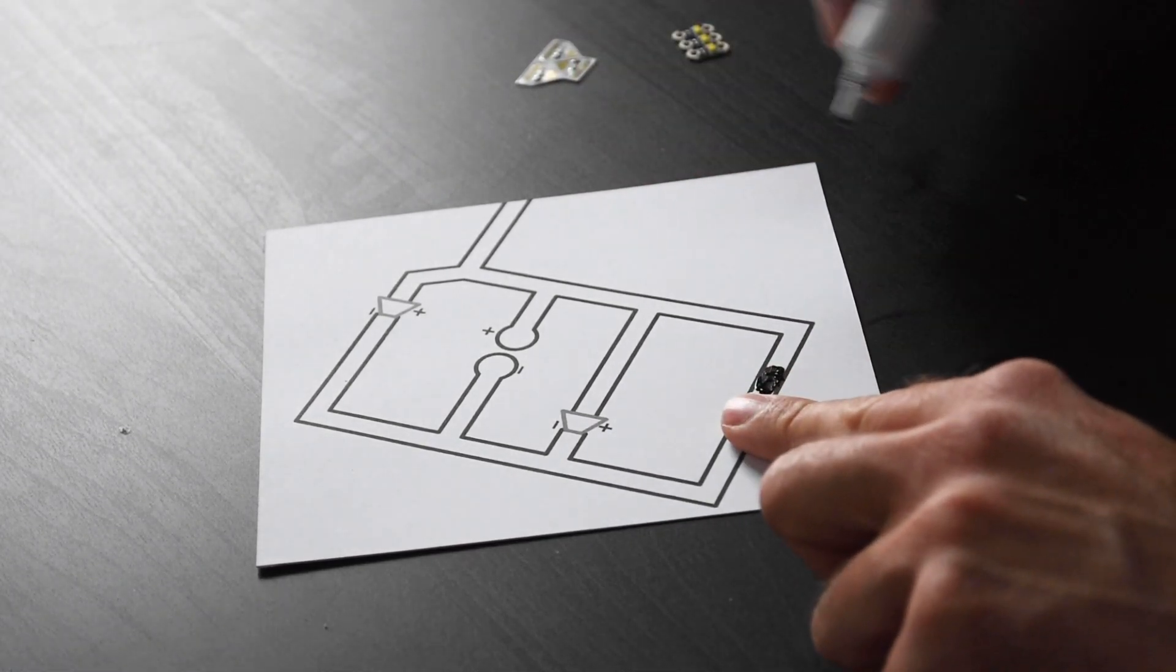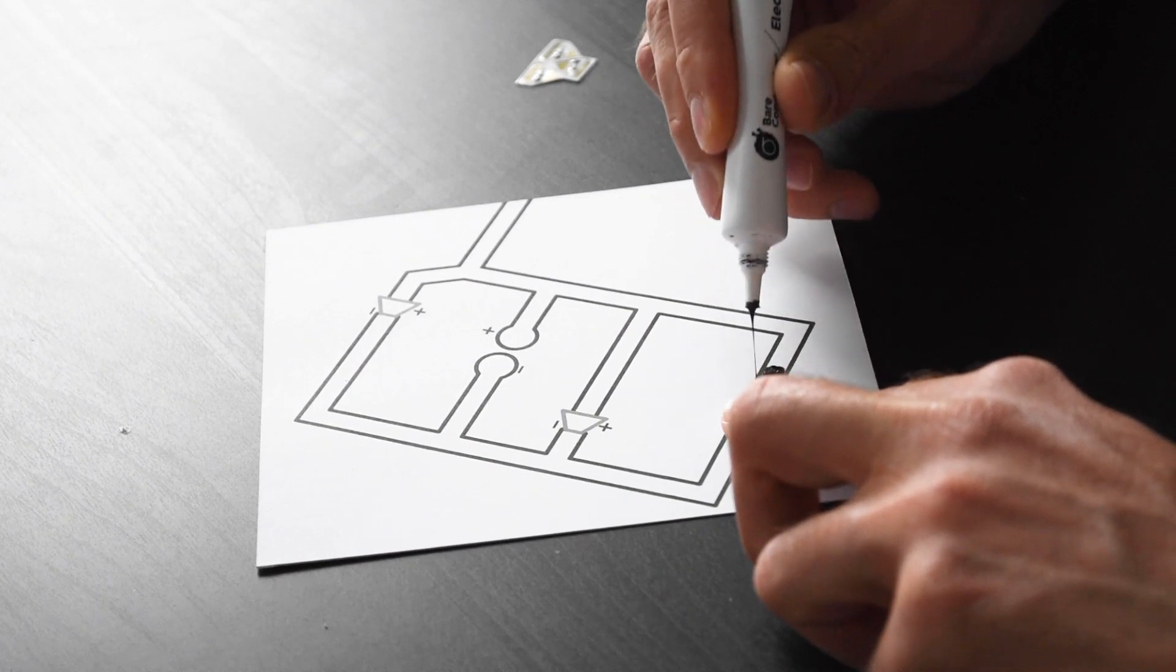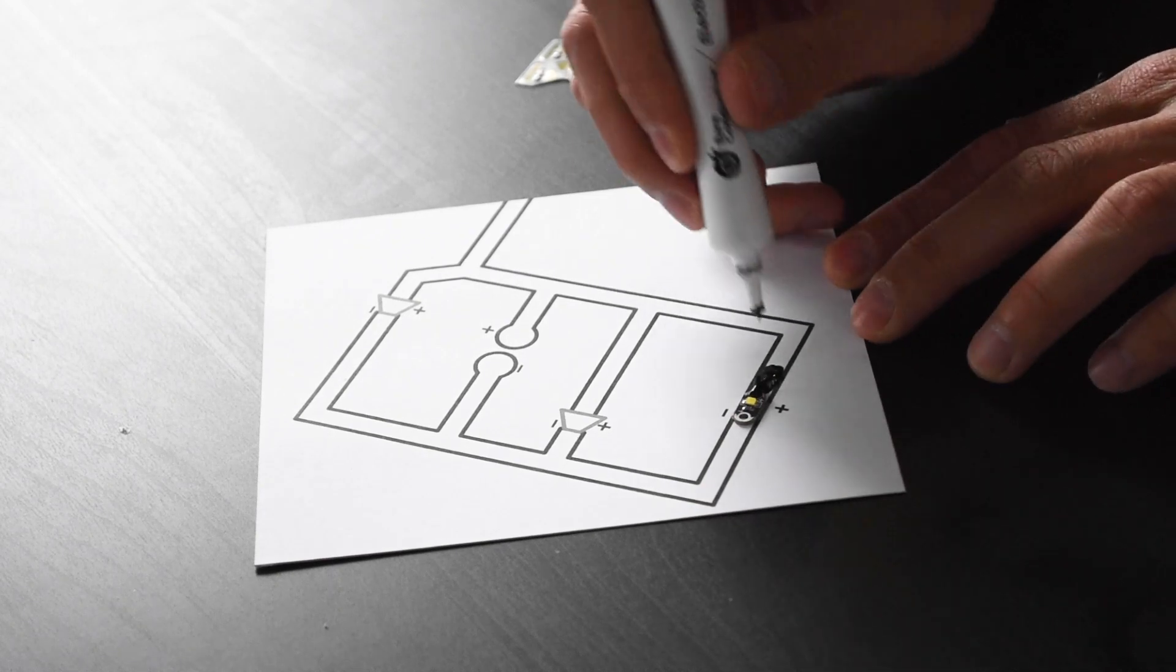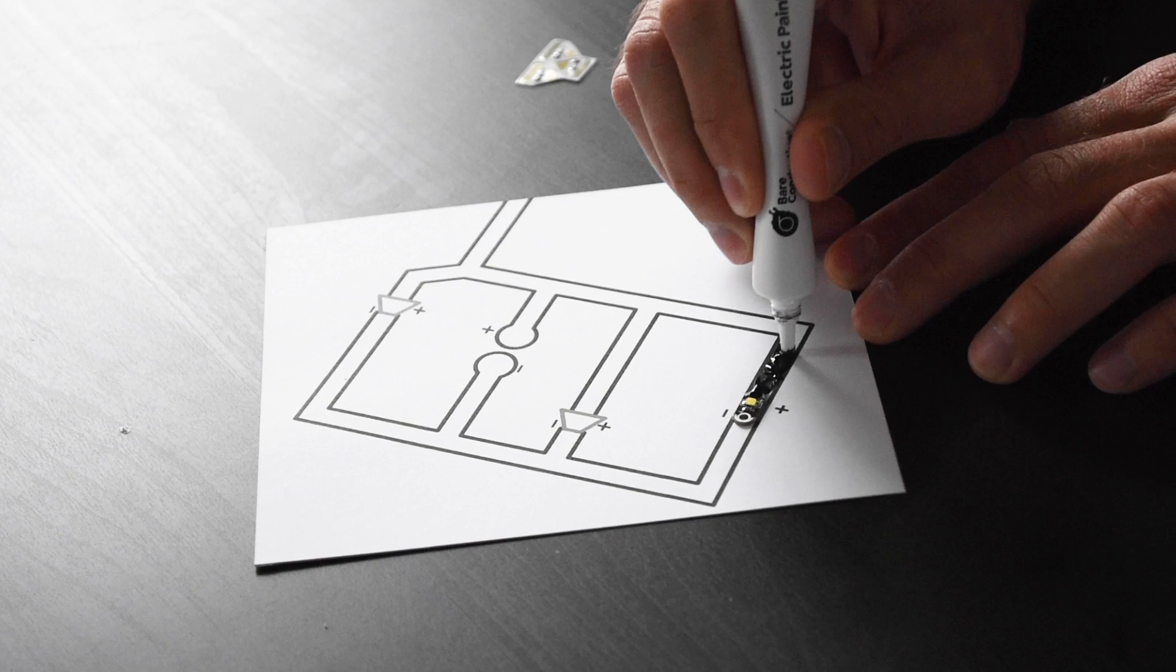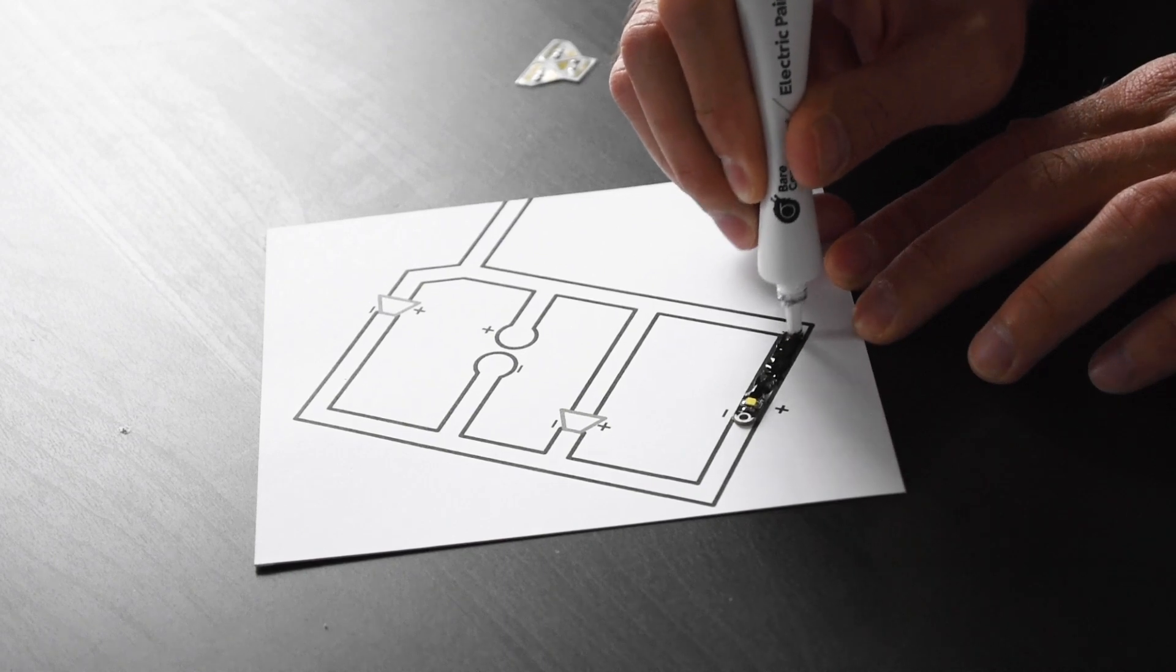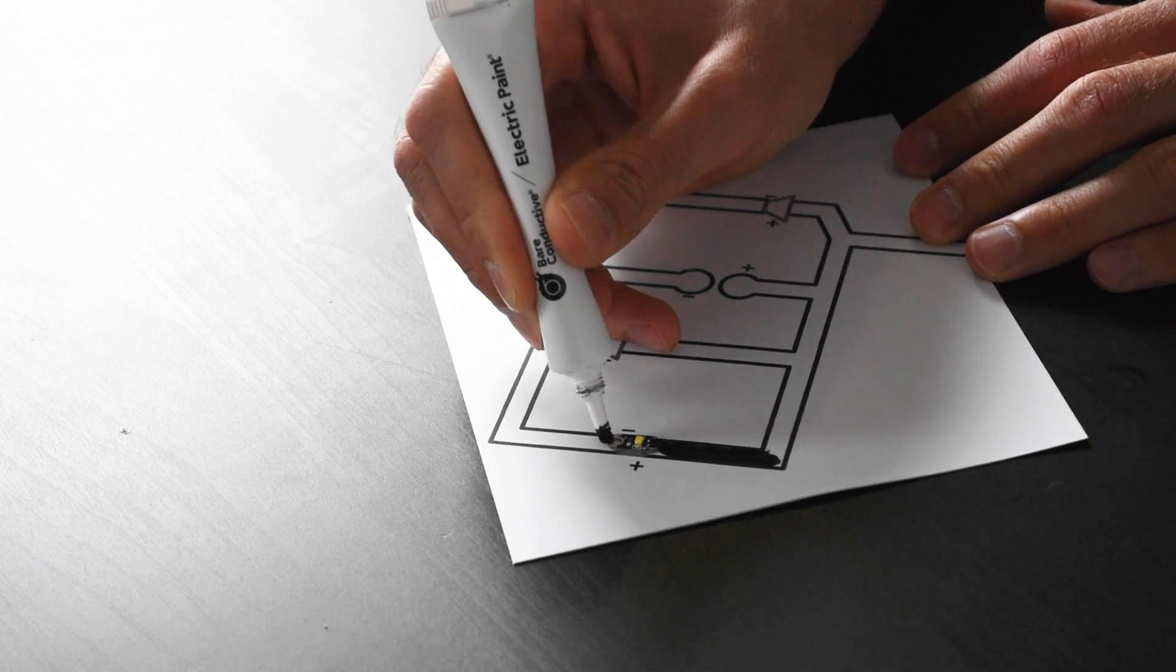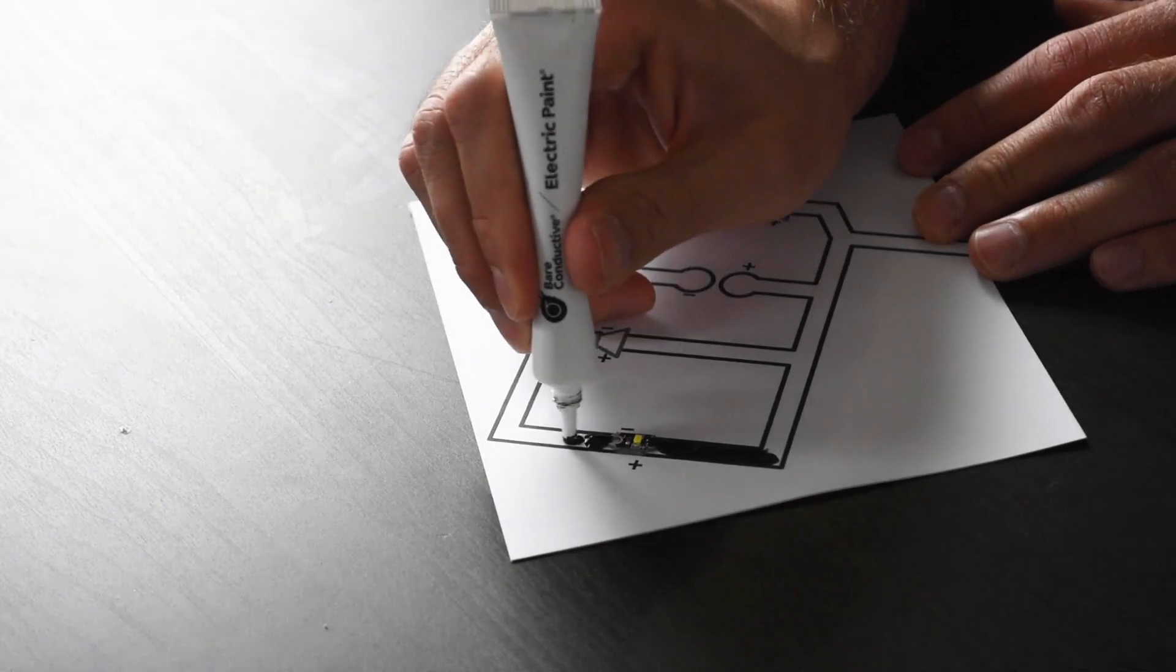I'm going to coat solder the lily pad to the circuit. There we go. So now I've coat soldered the Spark Fun, the lily pad to the circuit.